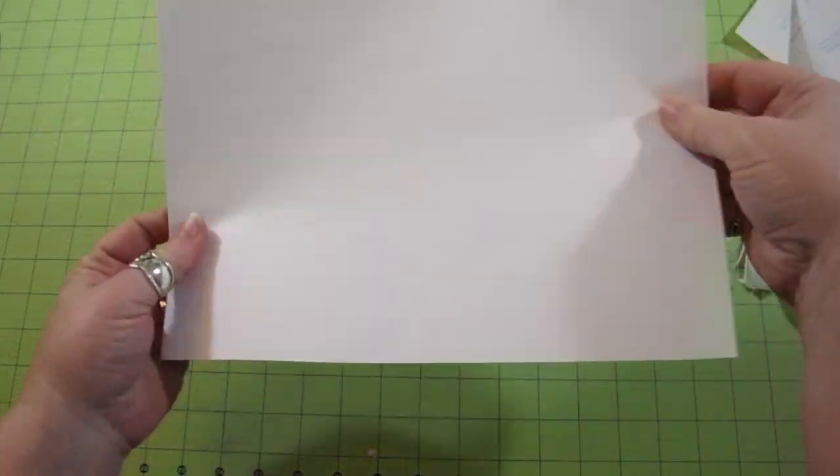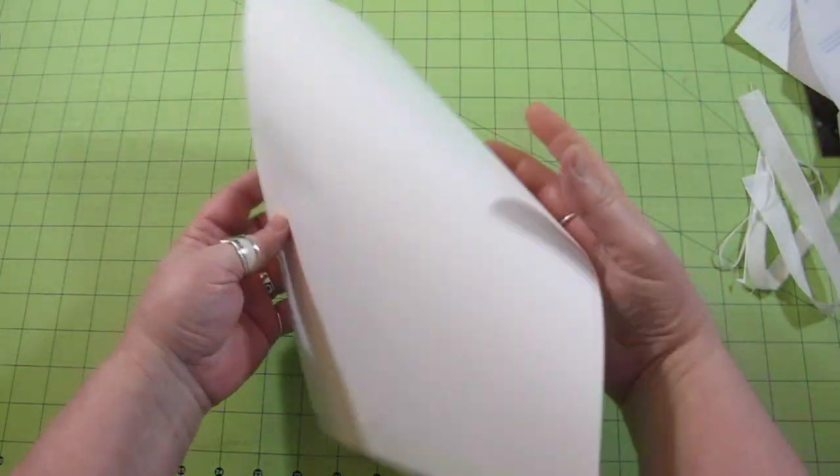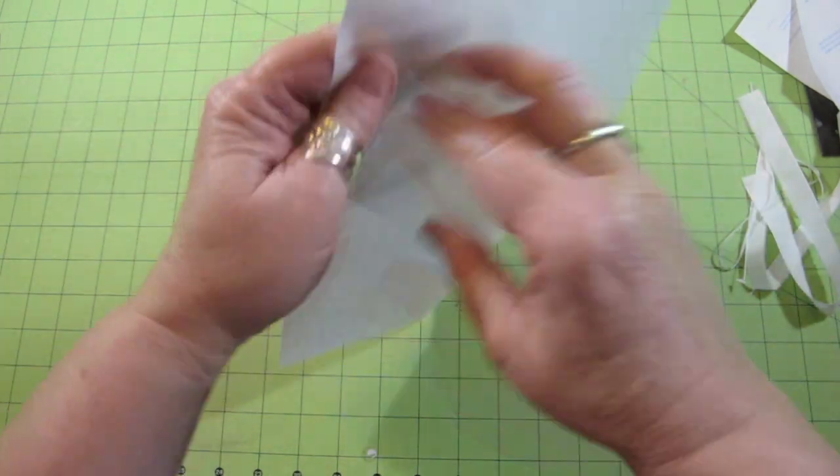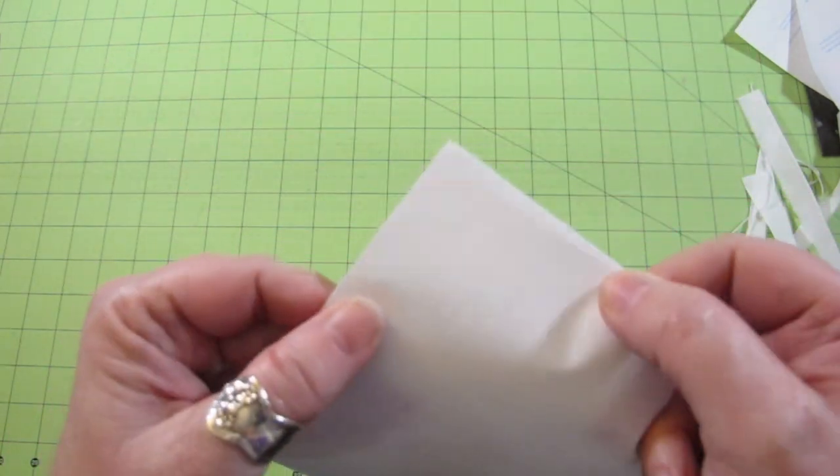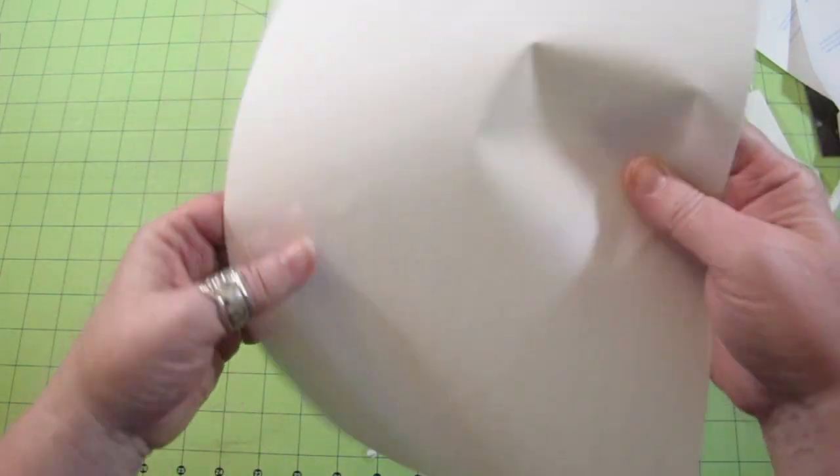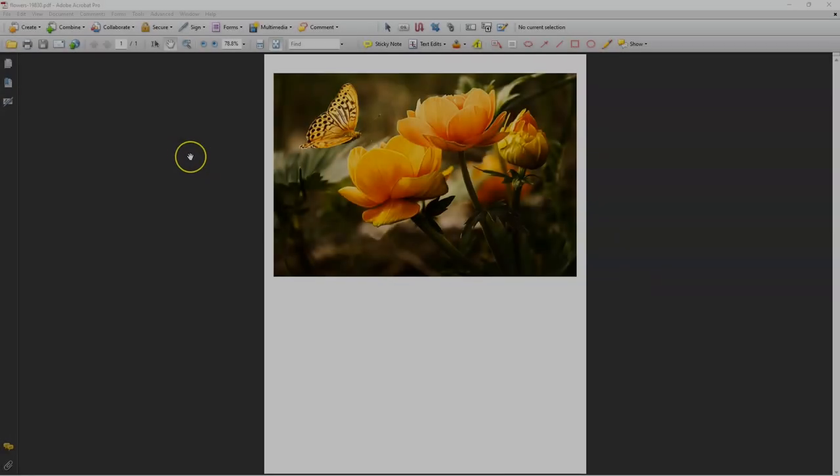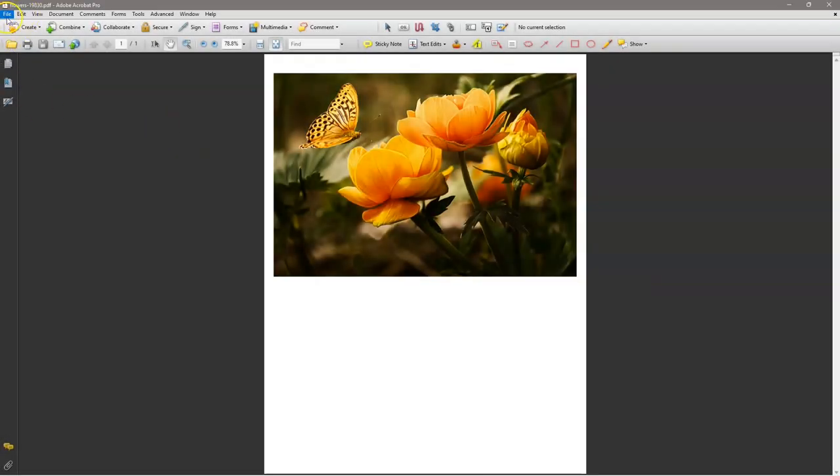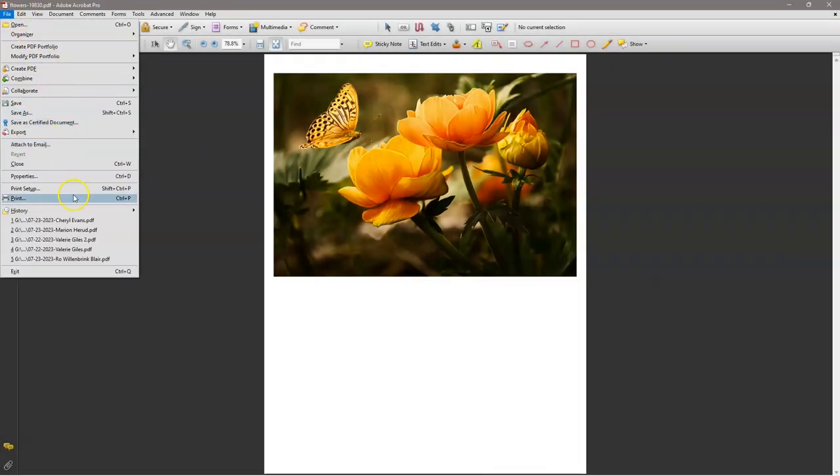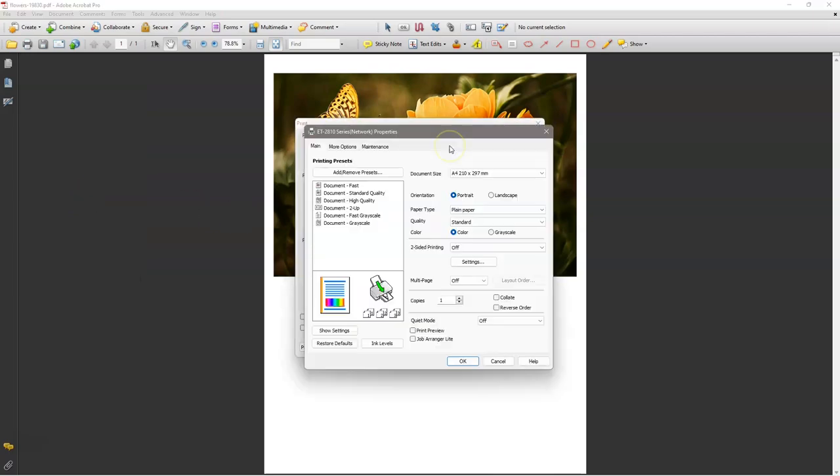When printing, make sure to insert the fabric sheet into the printer with the snipped corner located along the bottom edge, so the fabric feeds through easily. Once your fabric is prepared, open your image in a photo editing program or word processing program, or print directly from a PDF file as I'm doing.